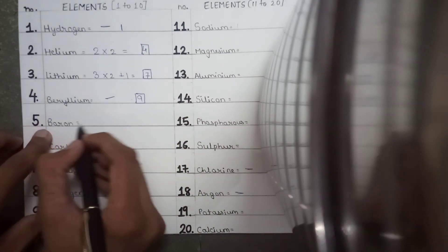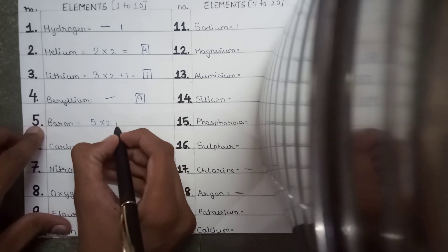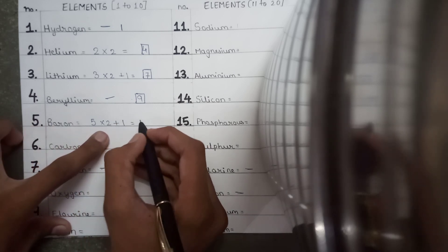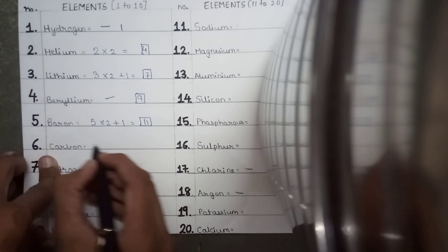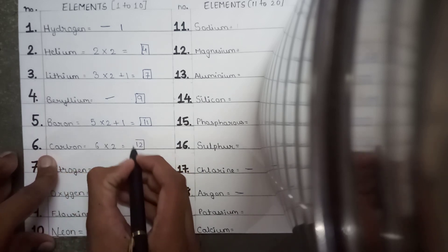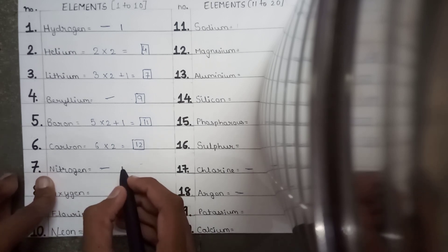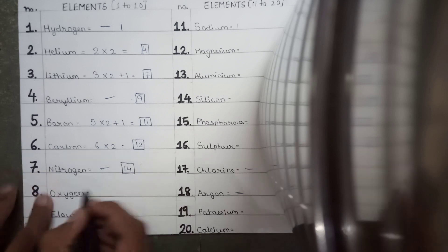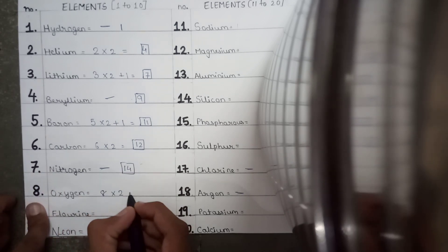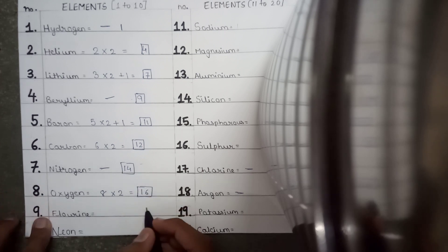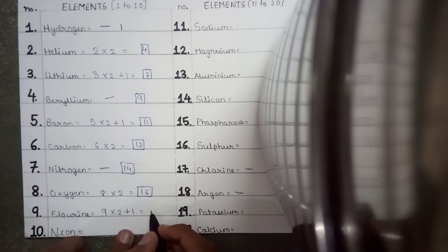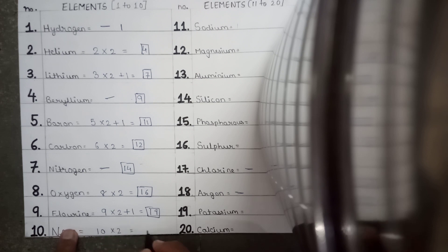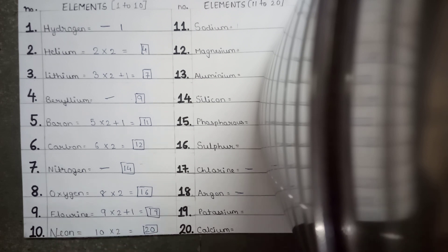For boron, atomic number is 5, which is odd, so we do 5 into 2 plus 1: that is 10 plus 1 equals 11. For carbon, 6 into 2 gives atomic mass 12. There is no trick for nitrogen, and nitrogen's atomic mass is 14. For oxygen, 8 into 2 equals 16. For fluorine, atomic number is 9 which is odd, so 9 into 2 plus 1: 18 plus 1 is 19. For neon, 10 into 2 equals 20.